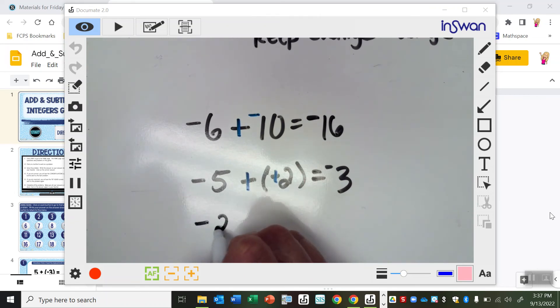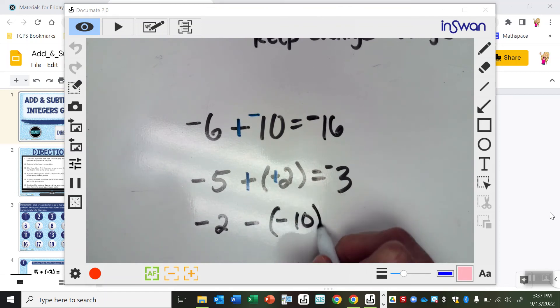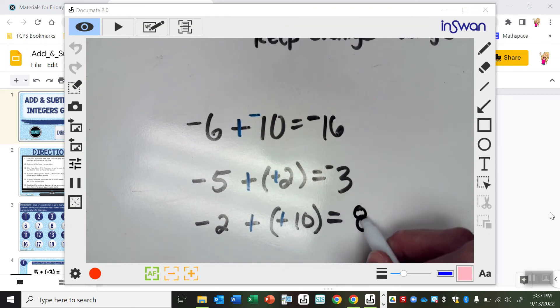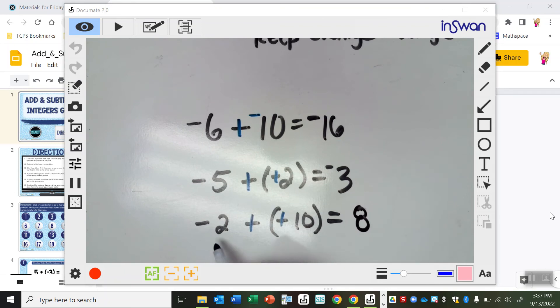All right, so let's try one more. Negative 2 minus negative 10. All right, so again, this is like the last one. Keep, change, change. So negative 2 plus 10. So they're different, so they act against each other. So 10 and 2, they subtract to 8. And which one's bigger? 10 is bigger than 2. So I'm going to keep the positive from the 10. All right, so hopefully this reminded you what to do.